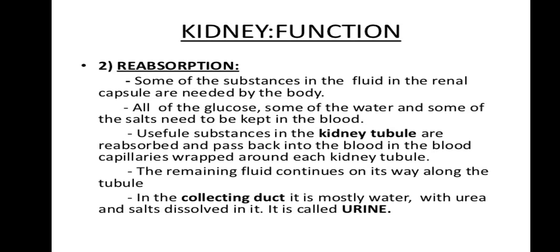The concentrated urine in the collecting duct passes to the ureters, which transport it to the urinary bladder for temporary storage. When the urinary bladder fills with urine, its walls get stretched and send a signal to the central nervous system. The central nervous system creates an urge in the body to pass urine, and urine is released through the urethra. This process of urine release is known as micturition.